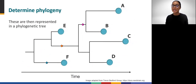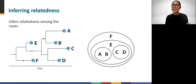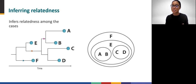Genome sequences from these cases can be represented in a phylogenetic tree. The resulting phylogenetic tree infers relatedness by analyzing sequence similarities, asking which case is more closely related to which other case. In this example, case A and case B are more closely related to each other than they are to case C. And cases A, B, C, and D are more closely related to each other than to cases E and F. The next module will explore in much greater detail how to interpret trees such as this one.